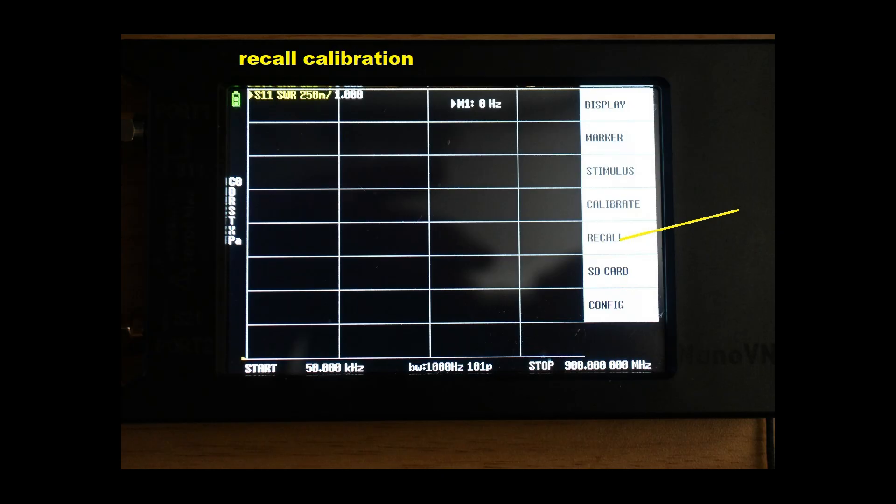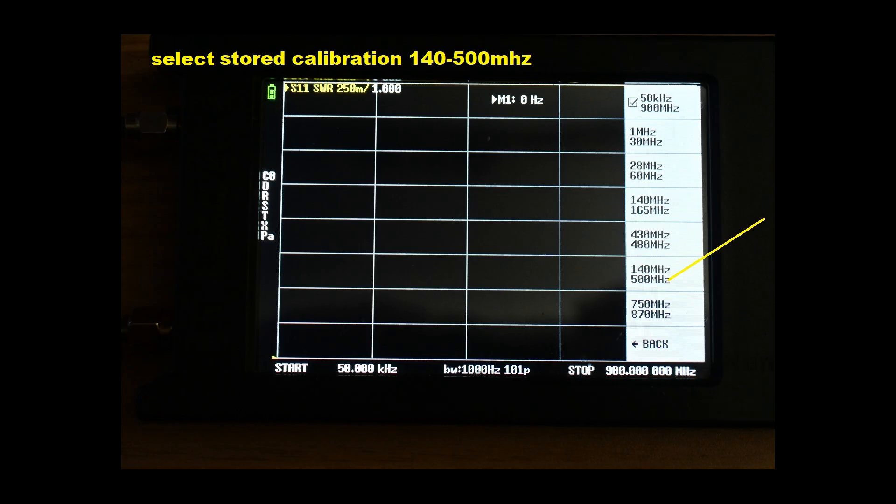My Nano VNA on power up defaults to a saved full spectrum calibration using two 36 inch SMA male to BNC male jumpers. We are not going to be using that cabling configuration or full spectrum for this test so we will select a previously saved calibration using the equipment we will be using for this test from the recall menu.